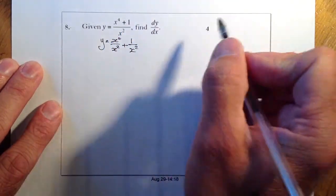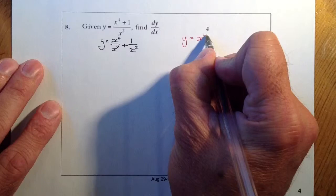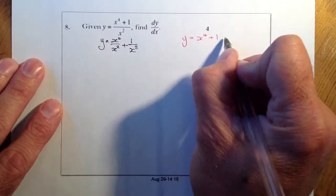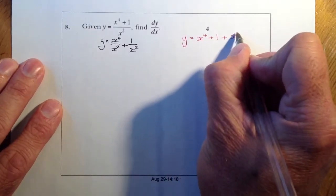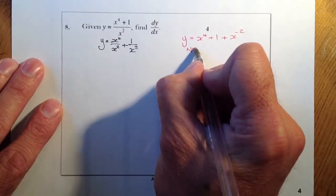So what I sometimes see would be someone writing y equals x to the power of 4 plus 1, and then that would be plus x to the minus 2. This cannot be done. This is not correct.